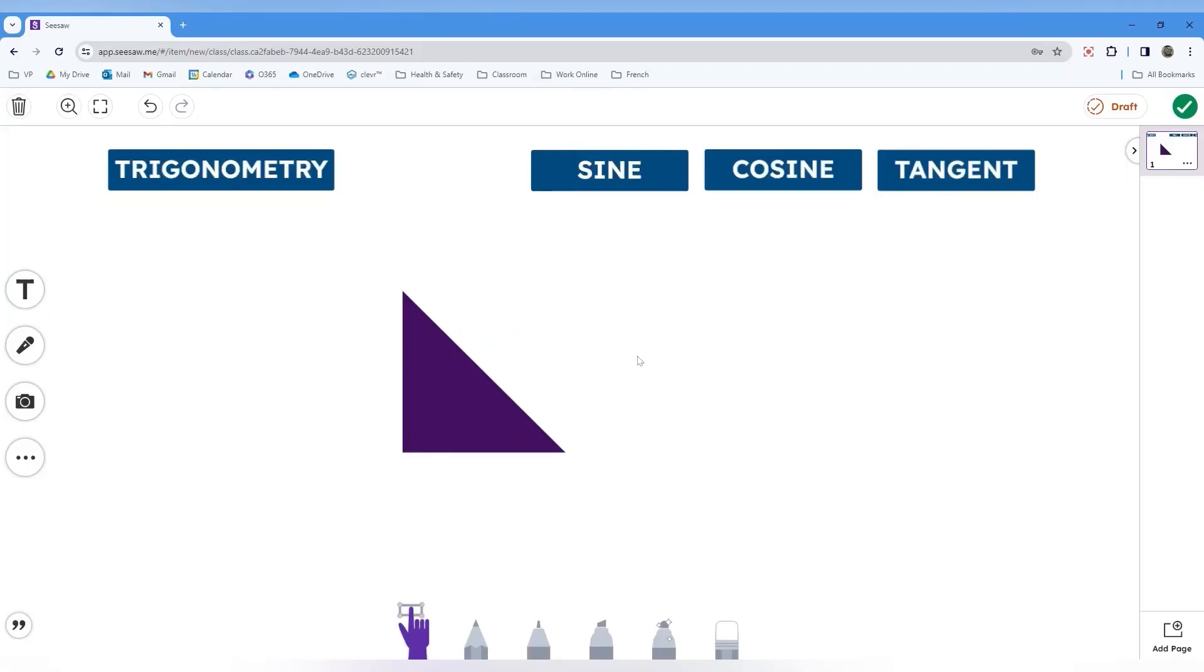Welcome back to another lesson of Math Explained. Today, we are going to be looking at trigonometry and how to solve for either a side or an angle using the sine, cosine, and tangent ratios.